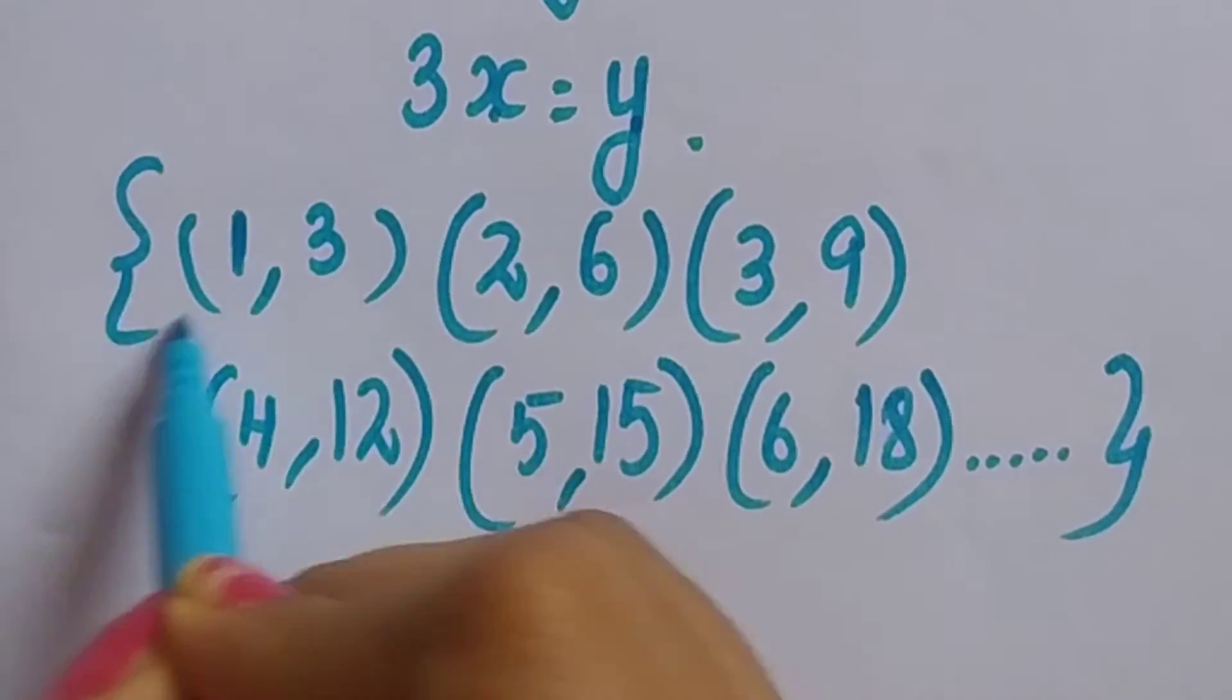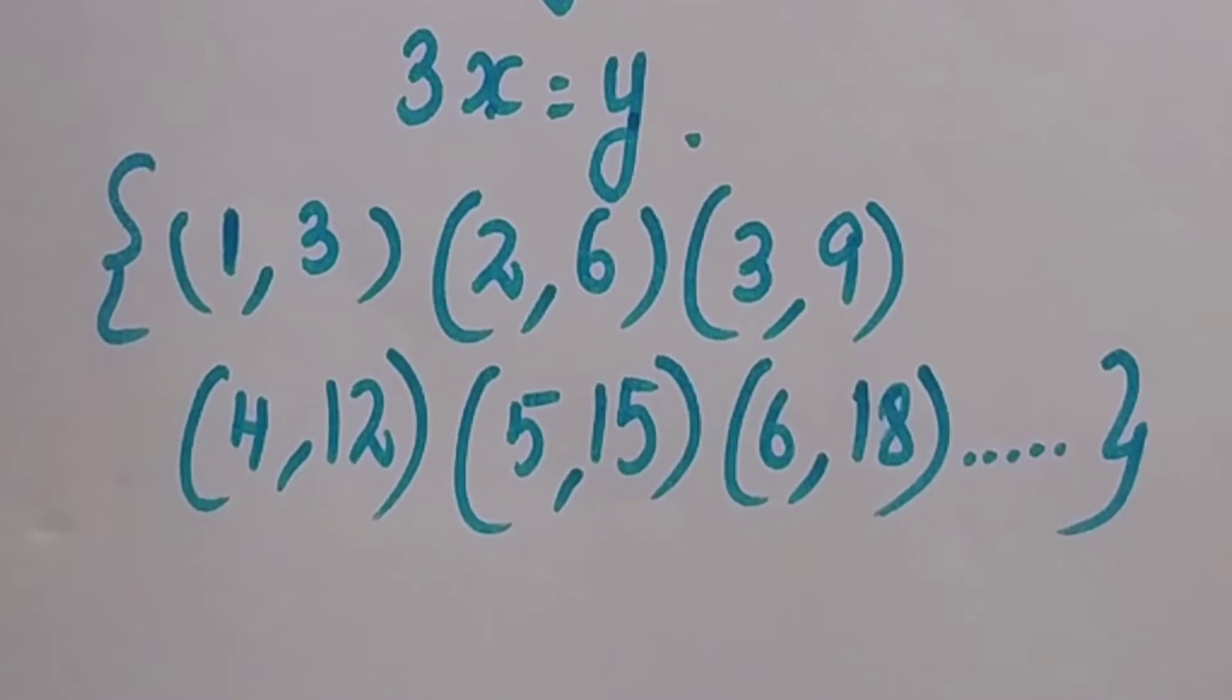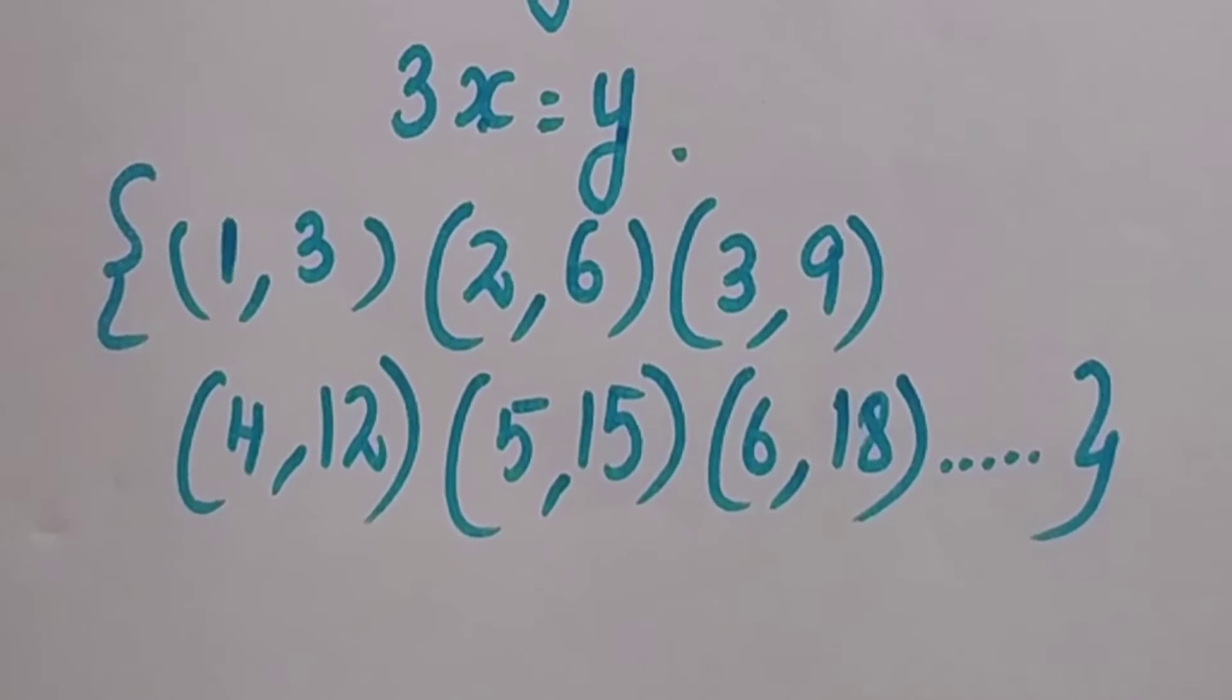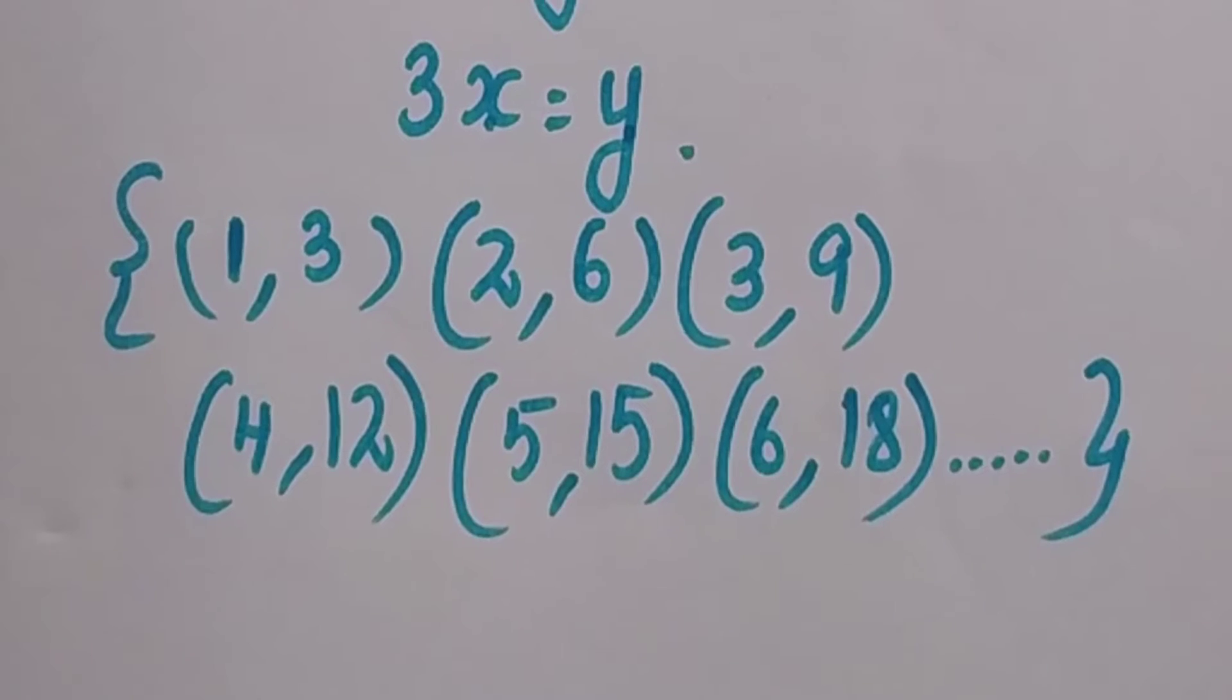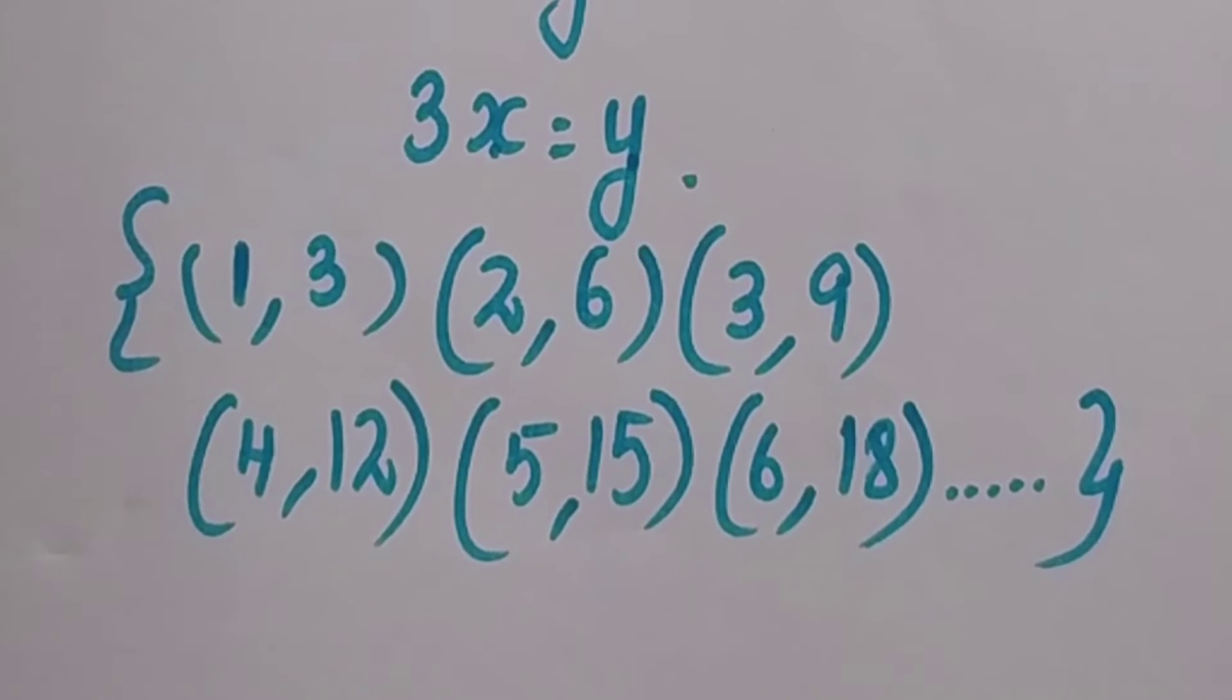We can go, we can write still 14. Now we have to find if this is reflexive, symmetric and transitive.